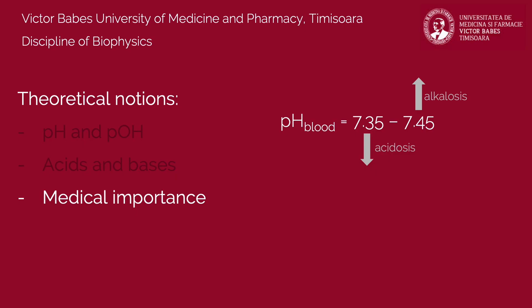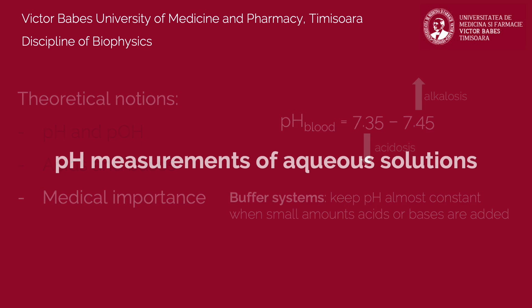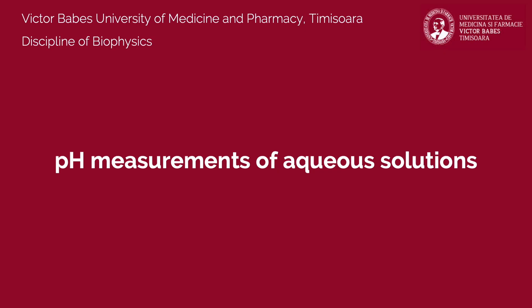In order to keep constant values of pH, organisms use protective buffer systems, which have the ability to keep pH values stable when small amounts of acids or bases are added. In this practical work, you will measure the pH of some buffer and non-buffer solutions before and after adding some volumes of acids and bases. Finally, you will calculate the buffering capacity of the two solutions.